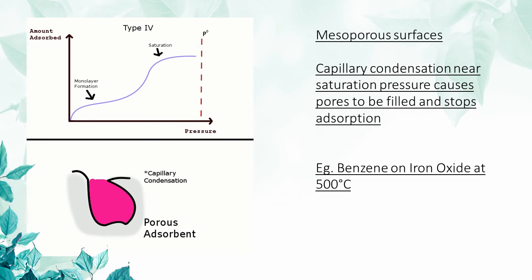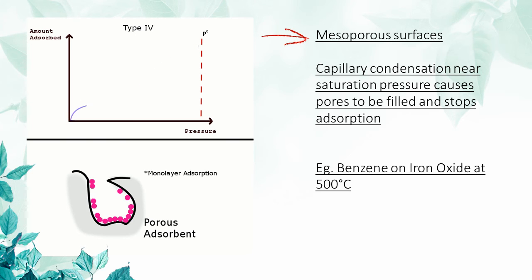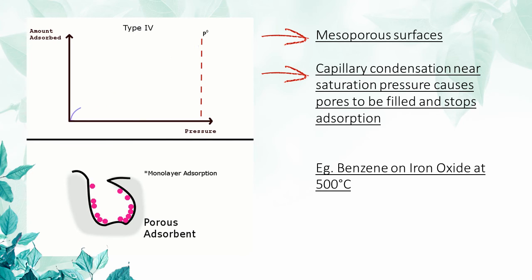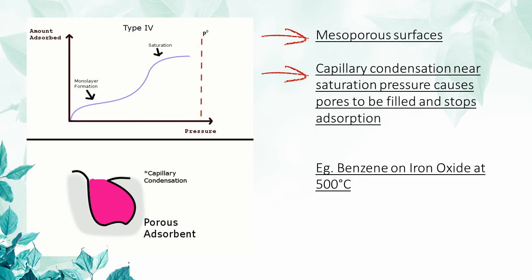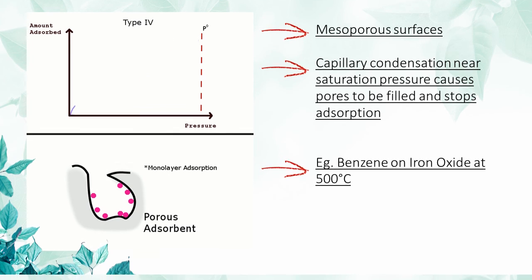Type 4 isotherms are observed on mesoporous surfaces. Firstly, a monolayer forms on the surface of the pores, followed by multilayer formation. Near the saturated vapor pressure, capillary condensation occurs due to the size of the mesopores. This causes the pores to fill up with liquid, and adsorption is halted. An example is the adsorption of benzene on iron oxide.